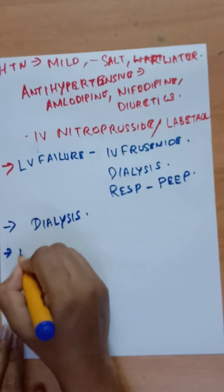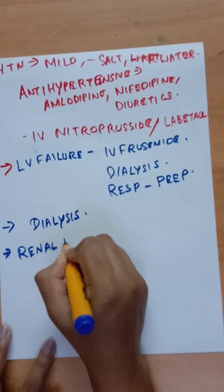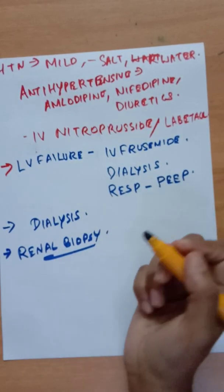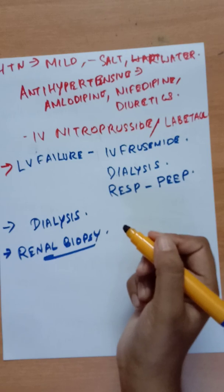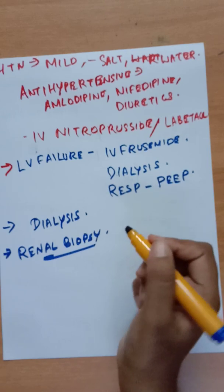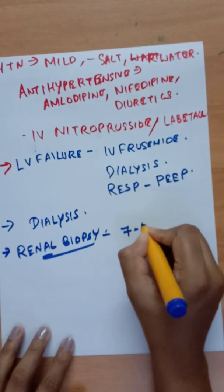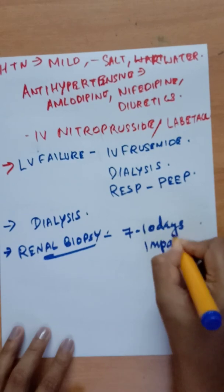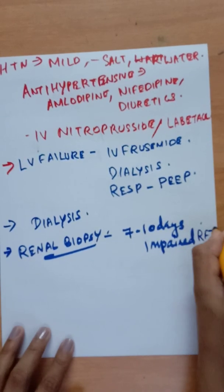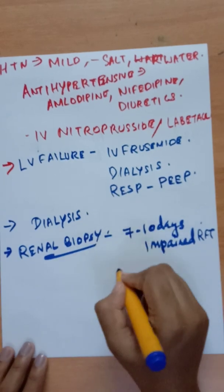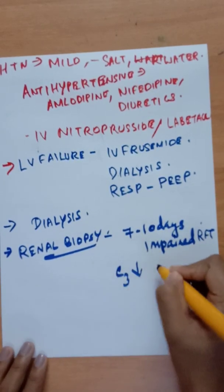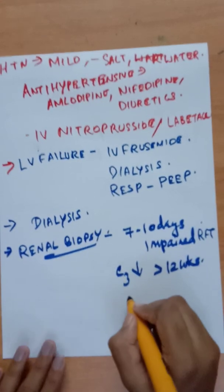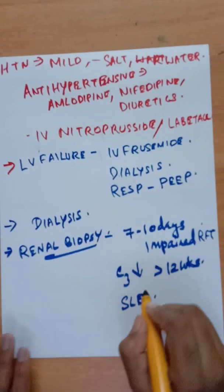Renal biopsy is rarely indicated in post-streptococcal glomerulonephritis. It should be considered if renal function is severely impaired beyond 7–10 days, if serum C3 remains persistently low beyond 12 weeks, or if features suggestive of SLE are present.